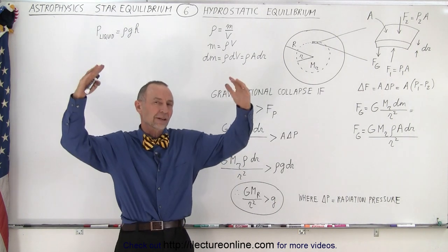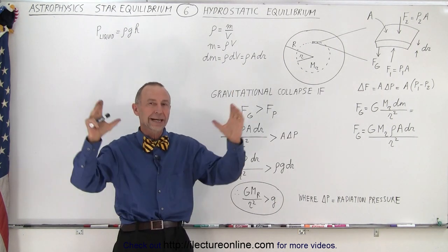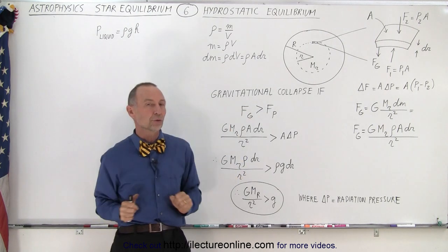It's that radiation pressure that essentially then stops, halts the collapse of the star. And then there's a balance between the two forces.